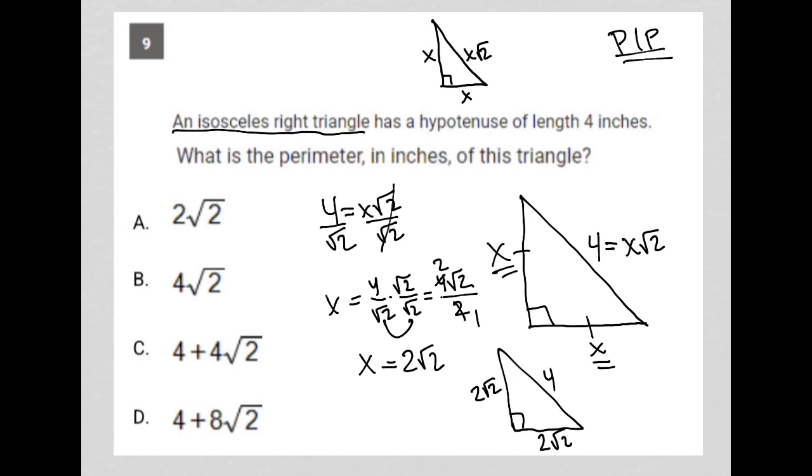So, the perimeter is just adding up all three of those sides. So, I have 2 root 2 plus 2 root 2 plus 4. 2 root 2 plus 2 root 2 is 4 root 2 and plus 4. Those are not like terms. I cannot combine them together. So, 4 root 2 plus 4 is my answer.